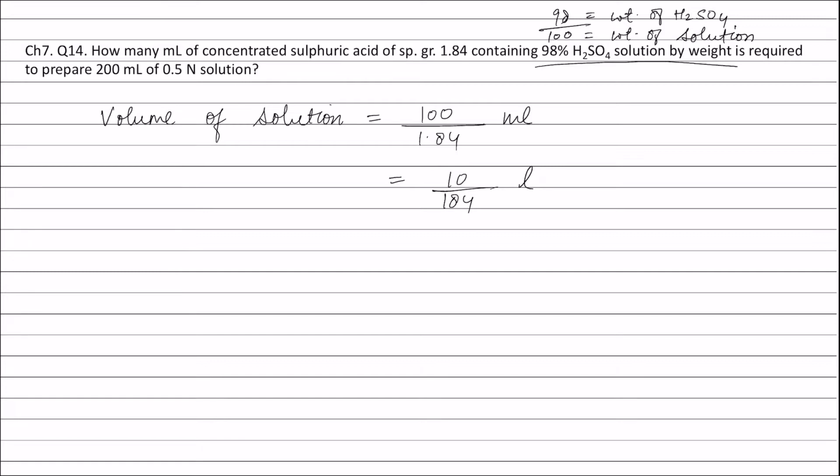Now, applying the formula N1V1 equals N2V2. N1 is the normality of original solution. V1 is the volume of the solution which we have to find out. N2 is the normality of the final solution, that is 0.5. V2 is the volume of the final solution, which is given as 200 milliliters.